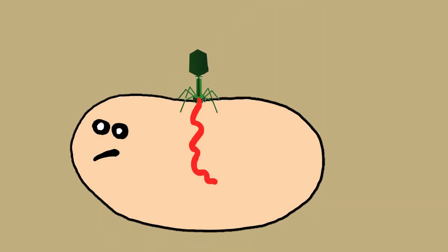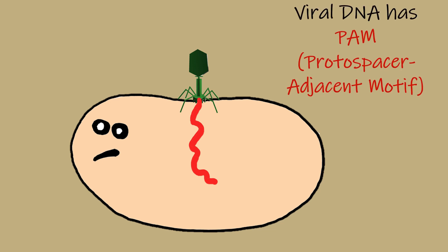So when the virus injects its DNA into the bacteria, the bacteria recognizes the viral DNA due to the presence of DNA markers, i.e., PAM protospacer adjacent motifs. Cas9 enzyme finds the complementary sequences in this viral DNA, binds to it and cleaves the viral DNA.